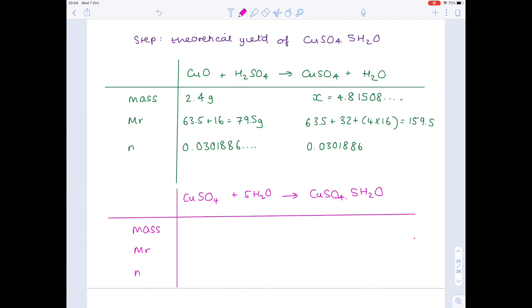We know that our mass of copper sulfate was 4.81508. We know we're after the mass of copper sulfate crystals, so I'm writing an x here, and we're going to do the same sort of calculations again. So first of all, start by working out the Mr of copper sulfate. We already did that up here, so I'm just going to copy that down.